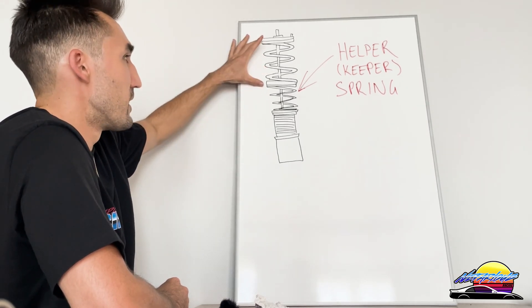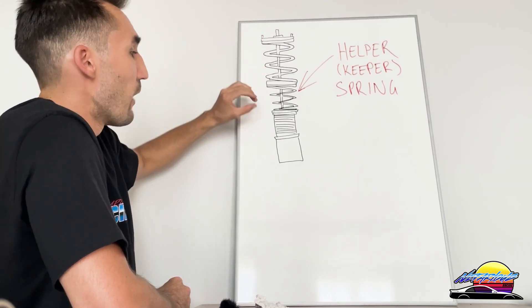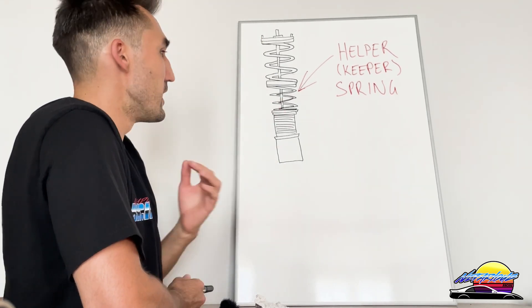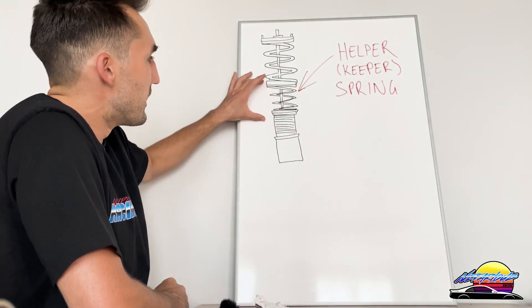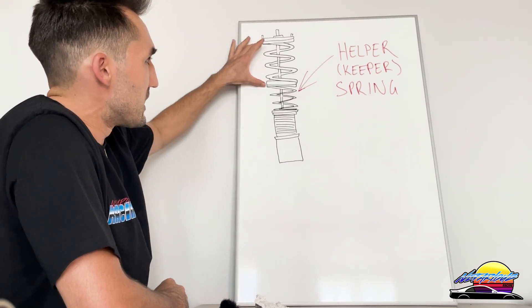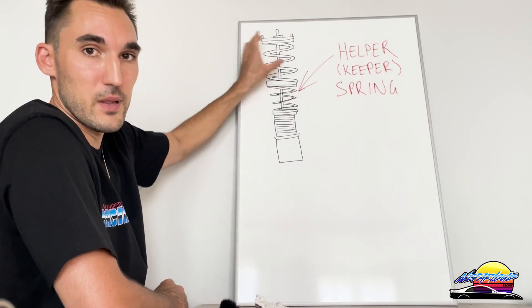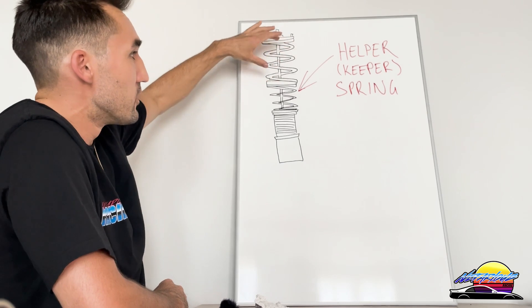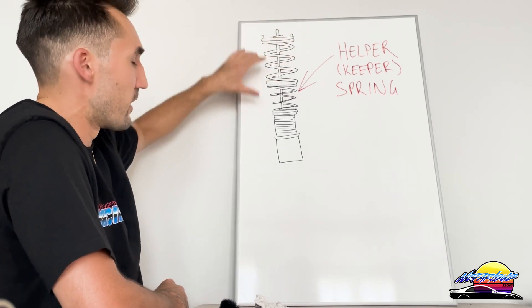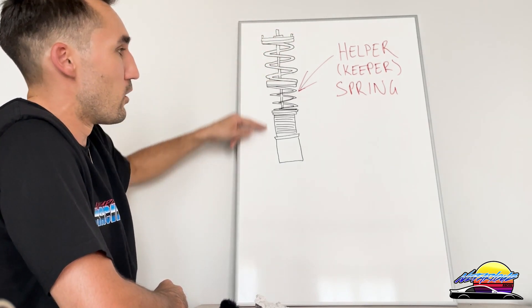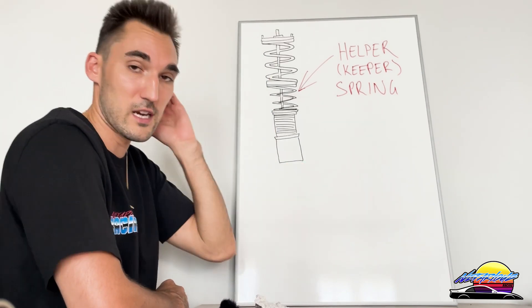However, as you lift the car or let's say you're hitting a curb on a racetrack and the wheel lifts, this is going to extend, keeping this spring captive so it doesn't fall out of place and rattle around or potentially shift and not reposition itself correctly. It will help you retain that long stroke so the tire can keep contact with the ground longer.